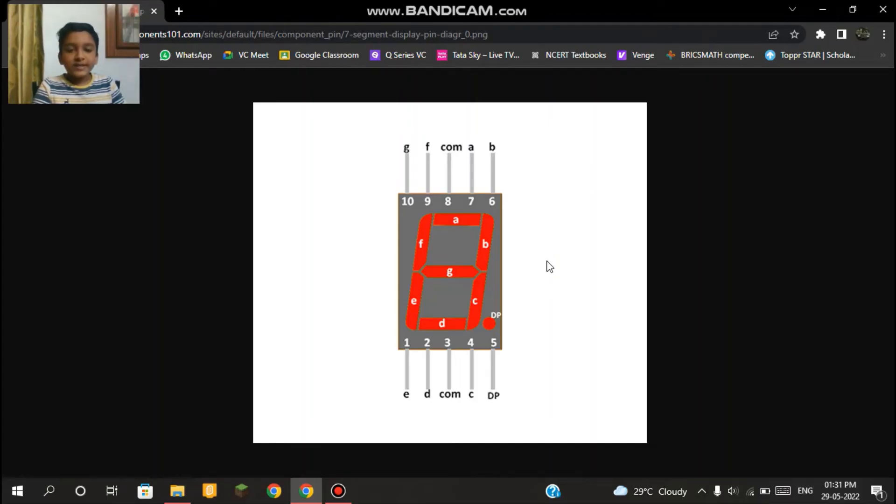In the 7 segment display there are 10 pins: an A pin, B pin, C pin through G pin, a DP pin, and two negative pins. Our negative pins are already connected to our Winboard because our 7 segment display is built into our Winboard.